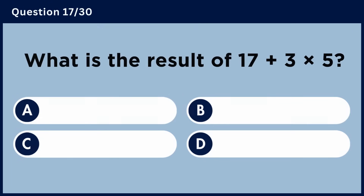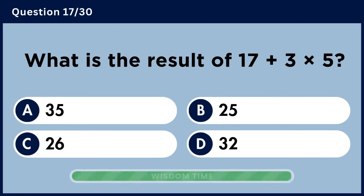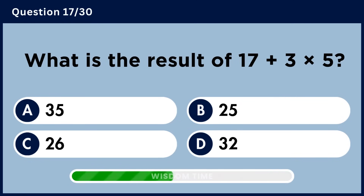What is the result of 17 plus 3 multiplied by 5? Answer A, 22.